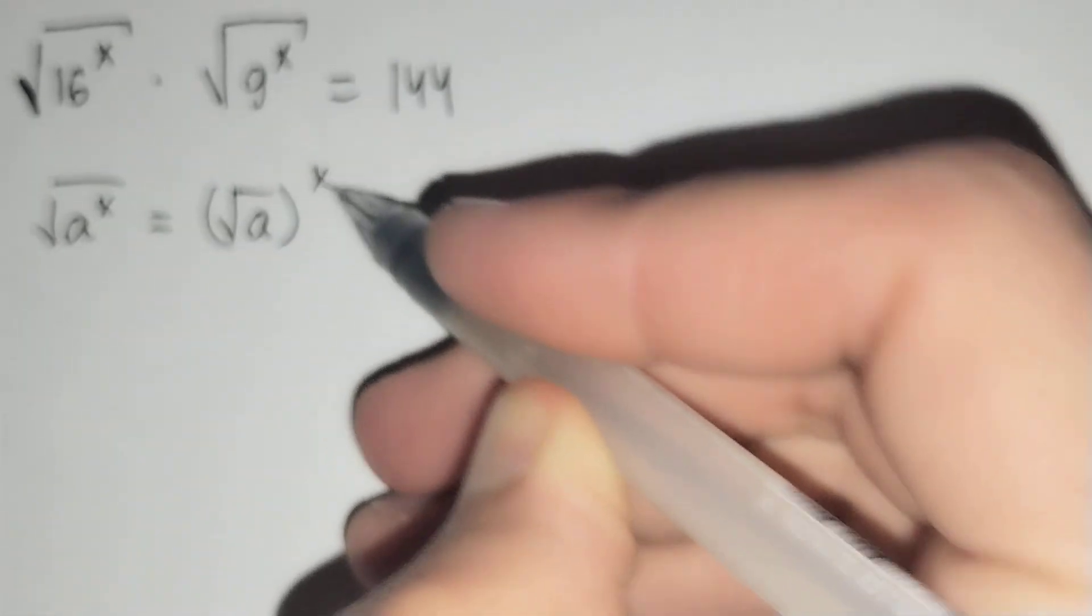How should we solve this problem? Firstly, we should know that the square root of a power x equals to the square root of a brackets power x.